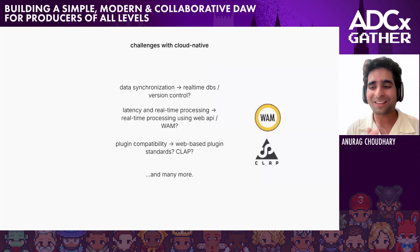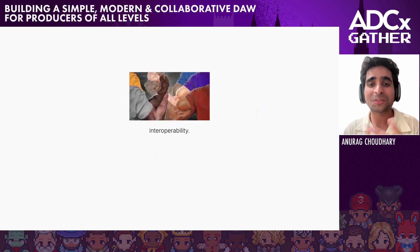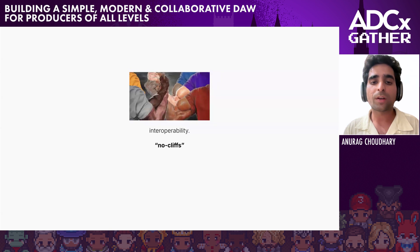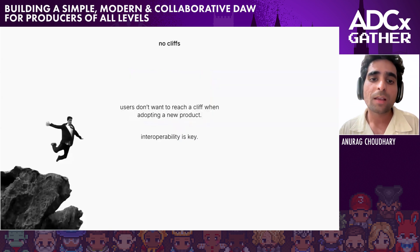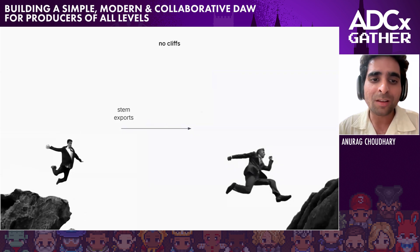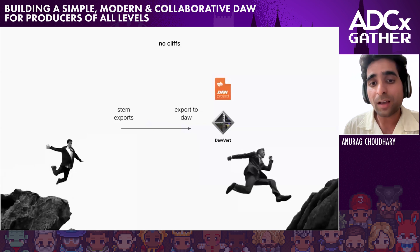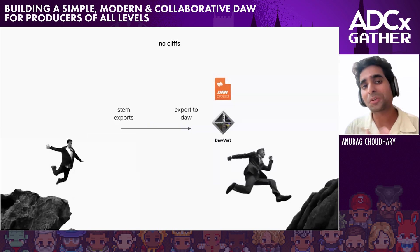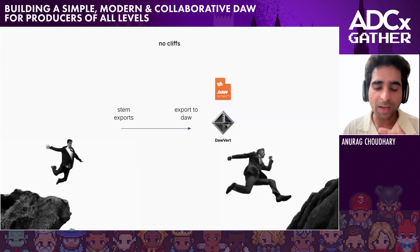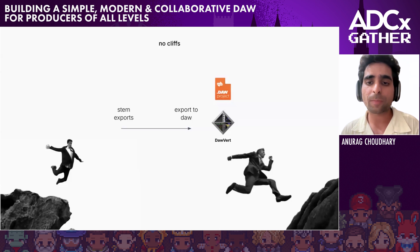The next modern standard is interoperability, which ties to a philosophy I've learned: we should not have cliffs in product experience. Users shouldn't spend hours on your product and then reach a cliff. Many products solve this through stem exports, but the cleaner way is to have files that can be exported to other DAWs so you can incrementally add features without users hitting a cliff. The DAW project is really helping toward that, and there are also experimental repositories like DAW Word, which I have huge respect for — it understands binaries of each DAW and helps build interoperability from the ground up.